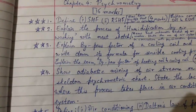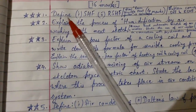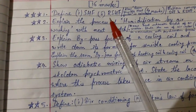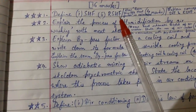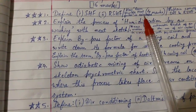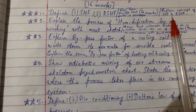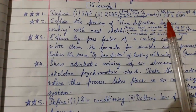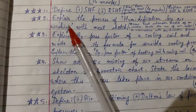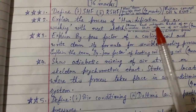Question number 1: Define SHF and RSHF, and explain how Room Sensible Heat Factor is calculated. It can also be asked as: explain the concept of SHF and RSHF. Question number 2: Explain the process of humidification by air washing with a neat sketch.